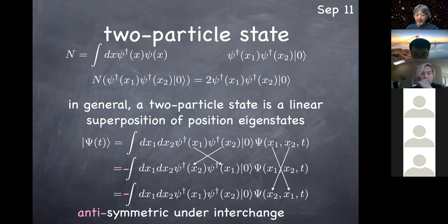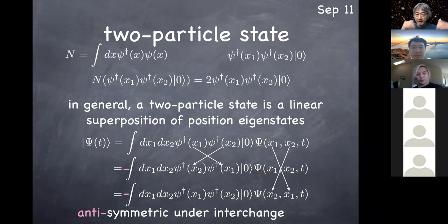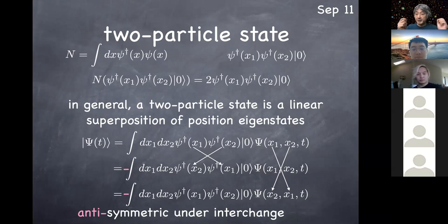Just as in the bosonic case where the wave function was automatically symmetric under interchange of particles, now the wave function is automatically anti-symmetric under interchange of identical fermions. QFT has quantum statistics built in — you don't enforce anti-symmetry of the multi-particle wave function by hand as in quantum mechanics class. The anti-symmetry is built into the anti-commutation relations of the creation operators for fermions.